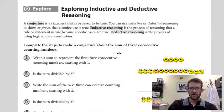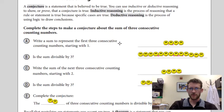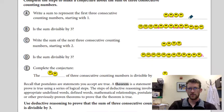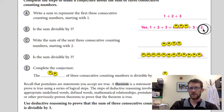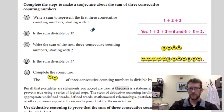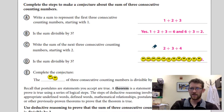For this one it says complete the steps to make a conjecture about the sum of three consecutive counting numbers. We'll start with the first three numbers: one, two, three. Is the sum divisible by three? Well, what do you think? It's six, so therefore yes it is, right? The sum of the next three counting numbers starting with two. So one, two, three and then we have four, five, six. We add those together. What is two plus three plus four? Well, that's nine.